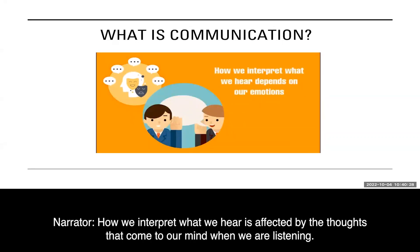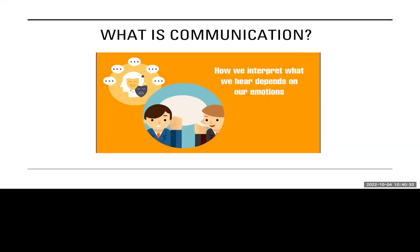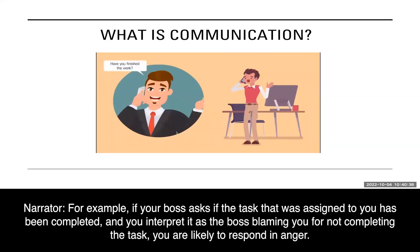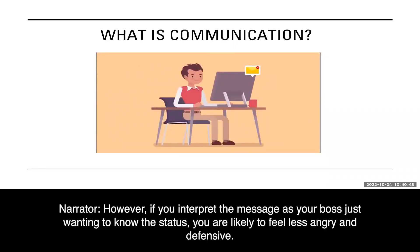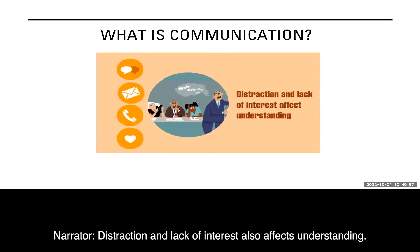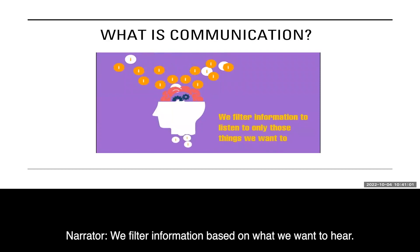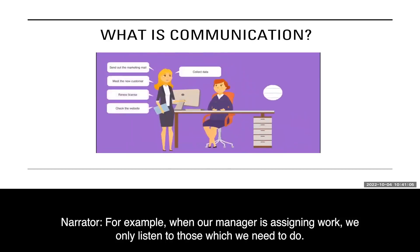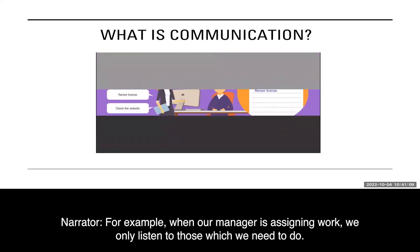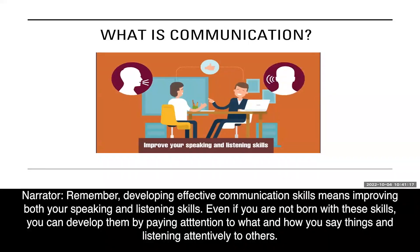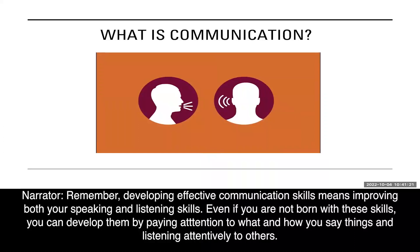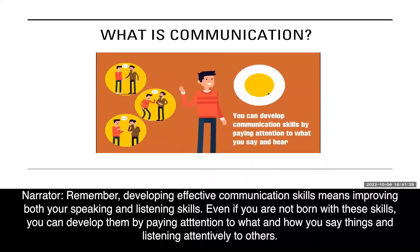How we interpret what we hear is affected by the thoughts that come to our mind when we are listening. For example, if your boss asks if the task assigned to you has been completed and you interpret it as the boss blaming you for not completing it, you are likely to respond in anger. However, if you interpret the message as your boss just wanting to know the status, you are likely to feel less angry and defensive. Distraction and lack of interest also affect understanding. We filter information based on what we want to hear. Remember, developing effective communication skills means improving both your speaking and listening skills. Even if you are not born with these skills, you can develop them by paying attention to what and how you say things and listening attentively to others.